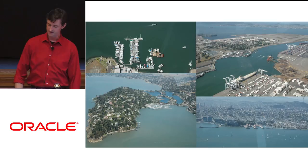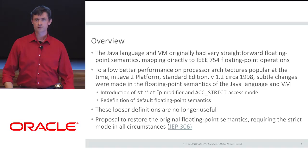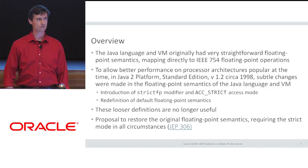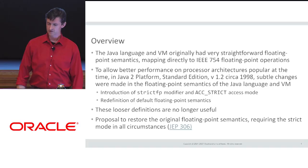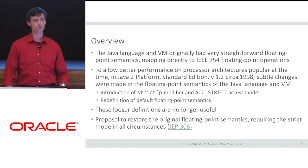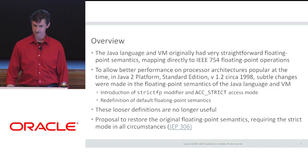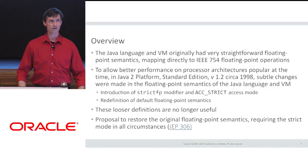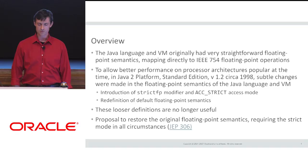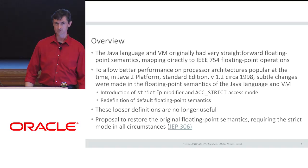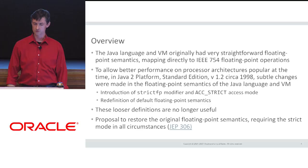An overview of what we've been talking about today. Originally, Java had very straightforward floating-point semantics, both in the language and the VM. However, to allow better performance on certain popular processors at the time — namely the x87 floating-point coprocessor — back in 1998, there were subtle changes made to the default floating-point semantics. So if you've come across the strictfp modifier, that's when that change came in. The default floating-point semantics were actually redefined. I think today in 2017 these looser definitions are no longer useful, and I've recently published a proposal — JDK Enhancement Proposal 306 — to restore the original floating-point semantics requiring strict floating-point in all circumstances.